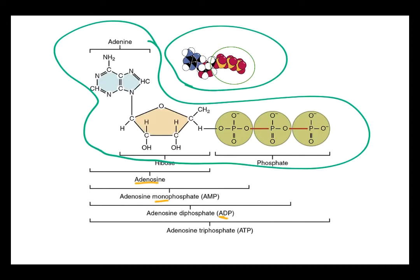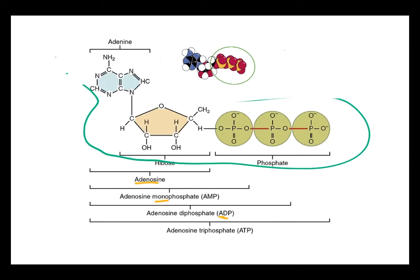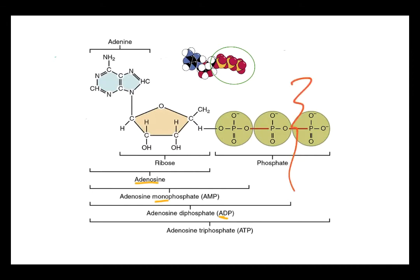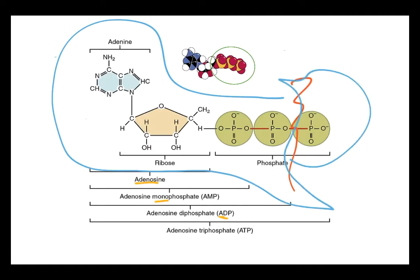The way that ATP works in our cells — the way it transfers energy from one place to another — is by breaking that bond. As that bond is broken, energy becomes available to do work in the cell. When we talk about synthesizing ATP, we do not mean building this entire structure; what we mean is adding back the third phosphate group.